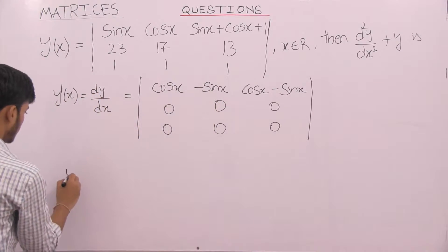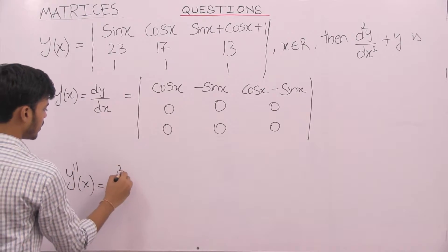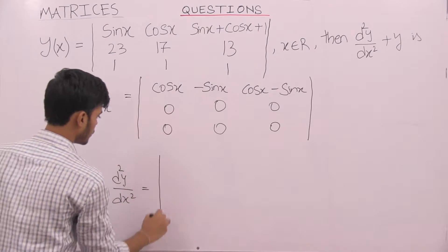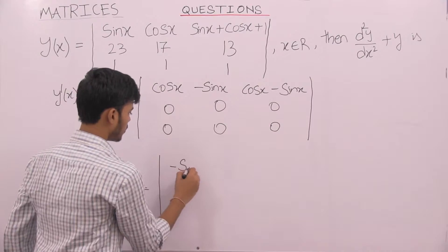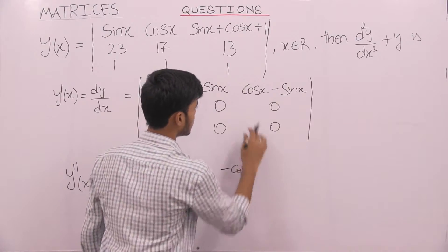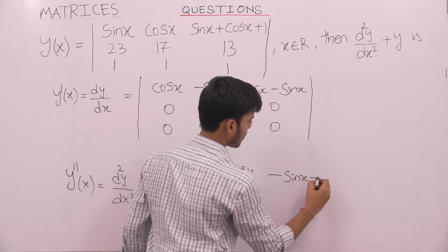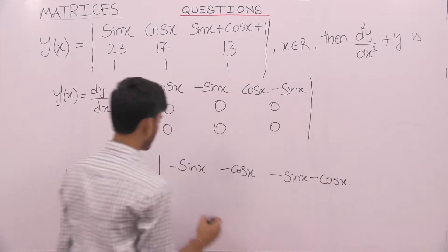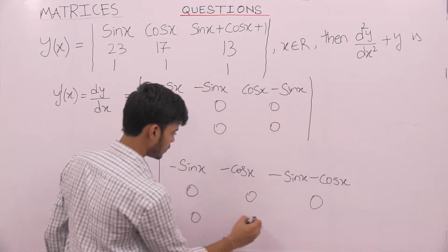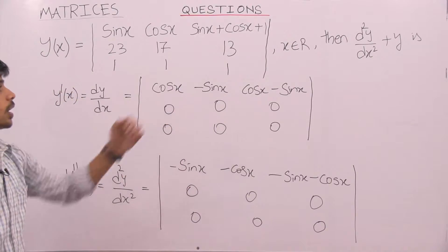Now, let us go to second derivative y double dash x or d square y by dx square which would give us derivative of cos x minus sin x and minus cos x this gives us minus sin x and minus cos x. These remain the same. Now, let us see what we are asked.